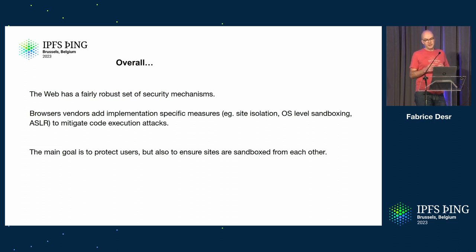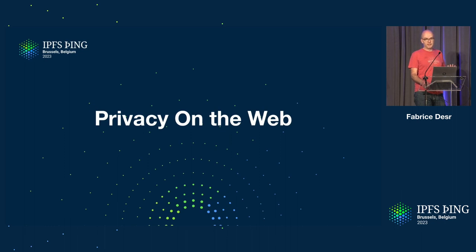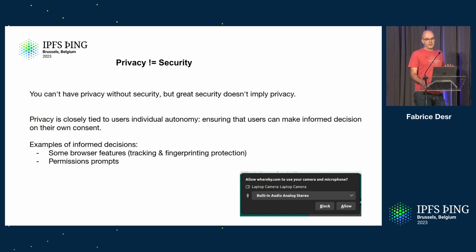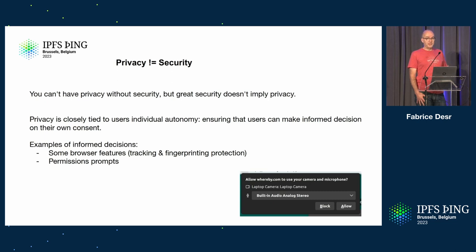Privacy and security go together but they're not the same. You can't have privacy without security — once security is broken, everything is off. But even with very good security you may have absolutely no privacy. Google probably has excellent security on their servers, but you don't have much privacy with them because they don't consider themselves part of the threat model. Privacy is mostly about user agency — individual autonomy, making sure people can make choices that they understand.